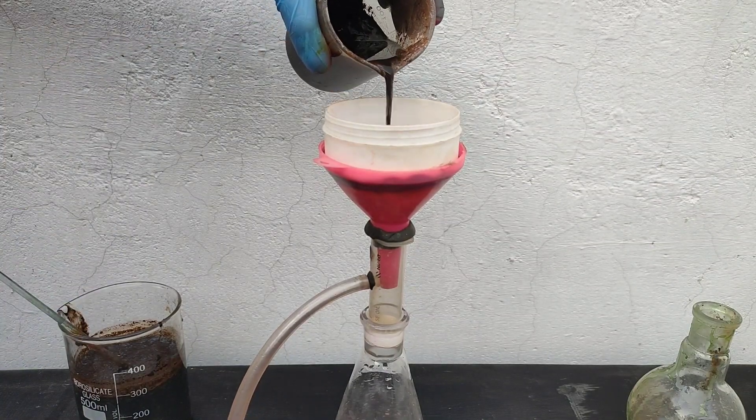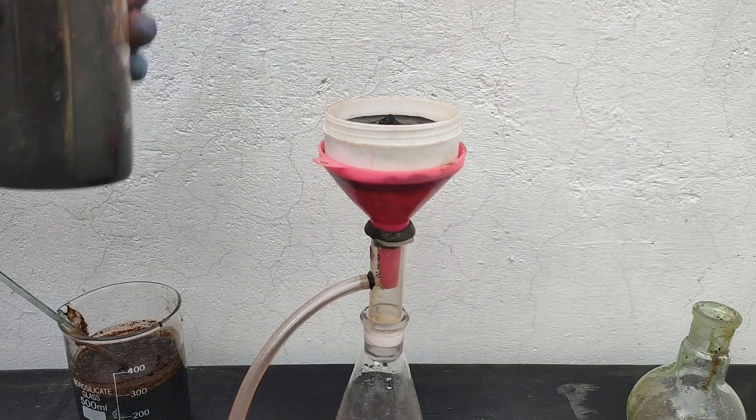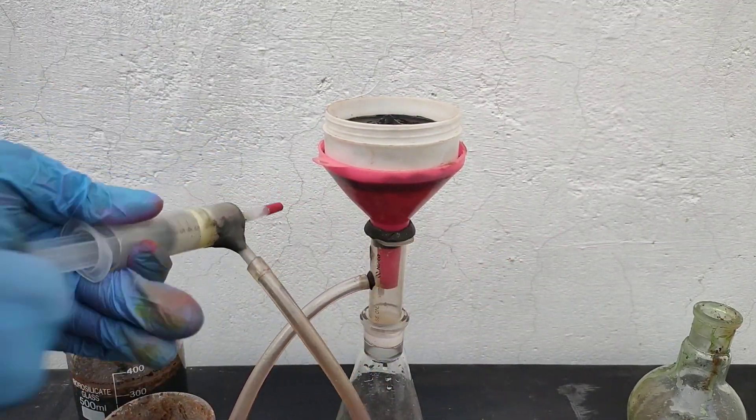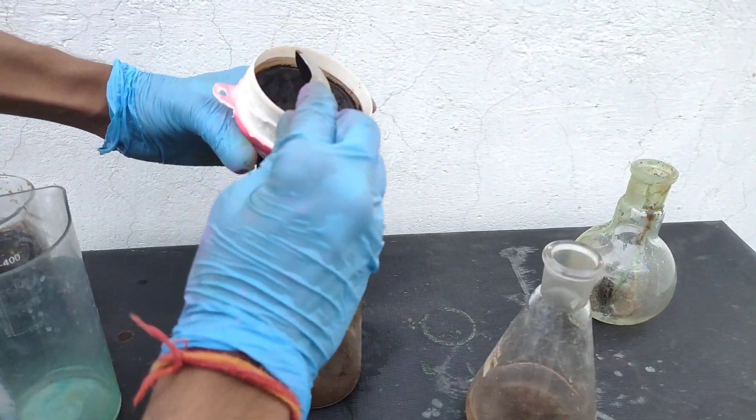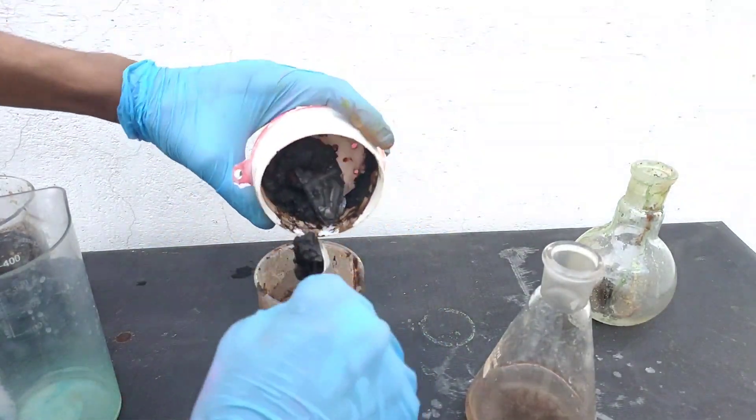Then I took the precipitate obtained via electrolysis and filtered it by my DIY Buchner funnel by vacuum filtration. Even on vacuum filter the filtration was very slow and took hours to filter. Had it been gravity filtration it would take days.